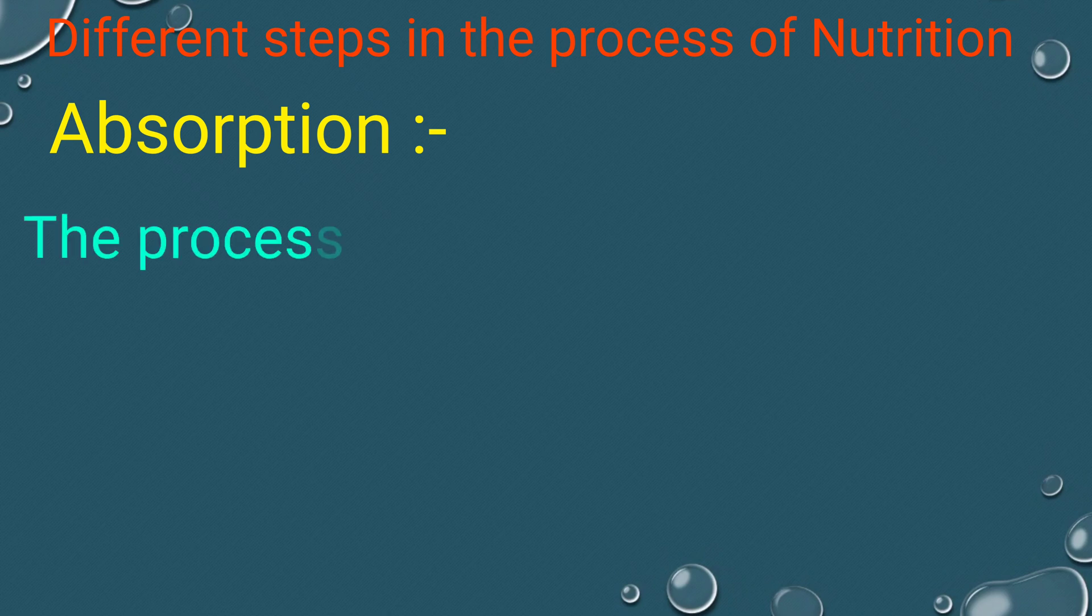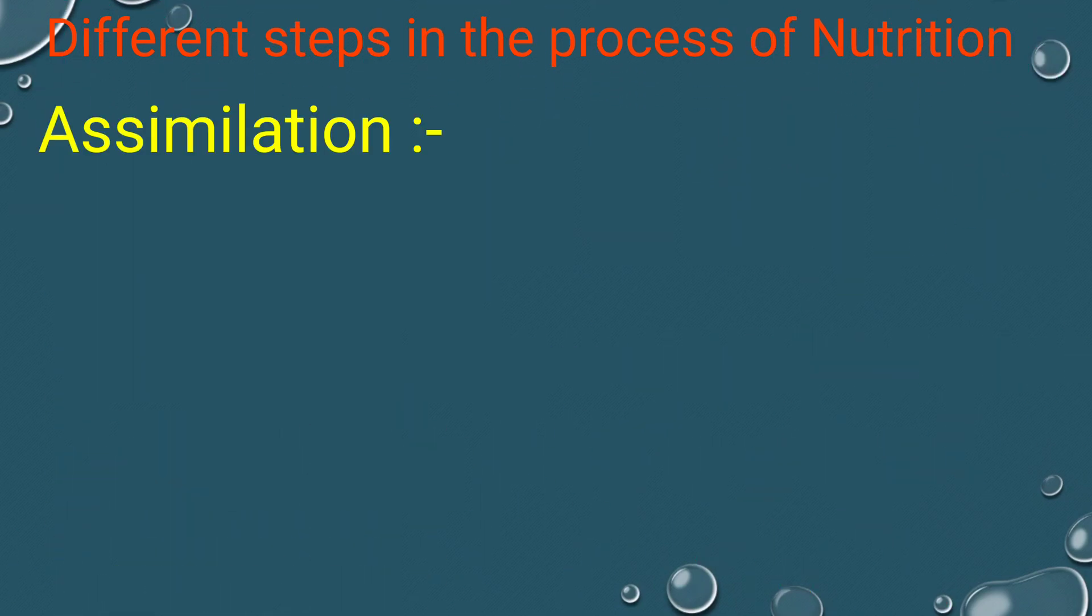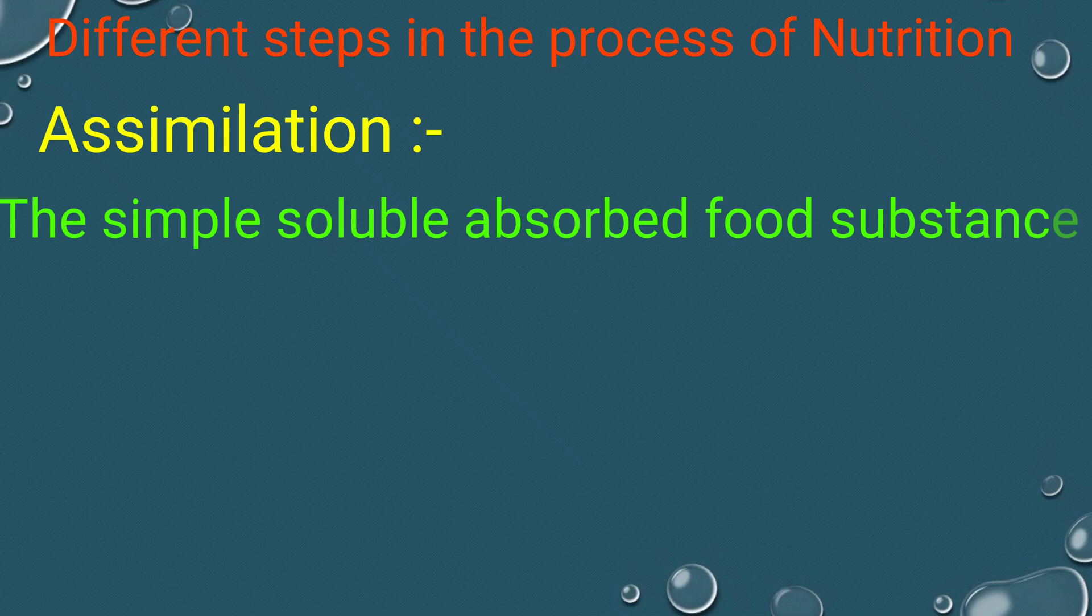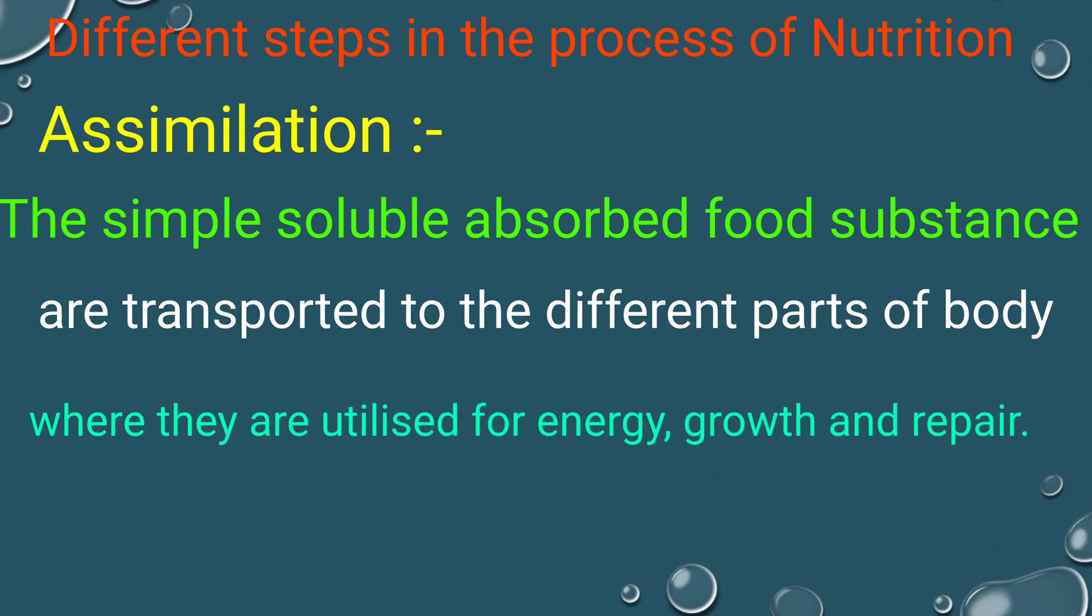Absorption. The process in which the simple soluble digested food substances are absorbed into the blood is called absorption. Assimilation: the simple soluble absorbed food substances are transported to the different parts of the body where they are utilized for energy, growth, and repair. This process is called assimilation.